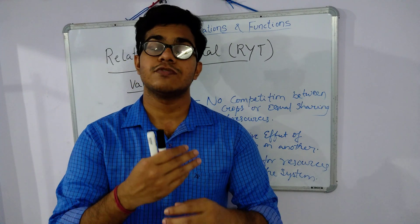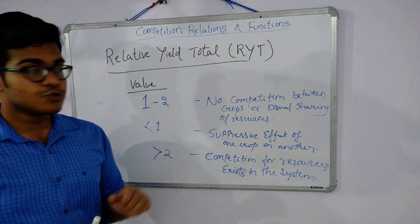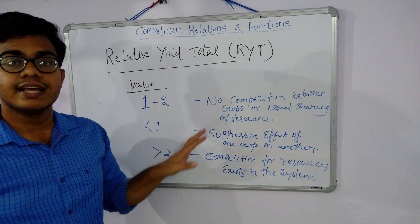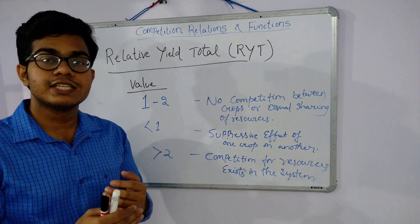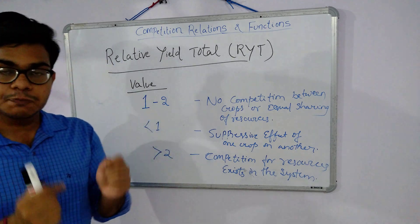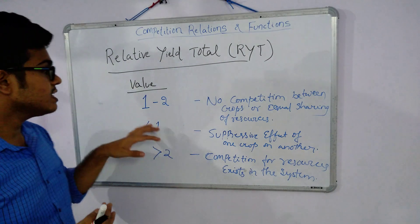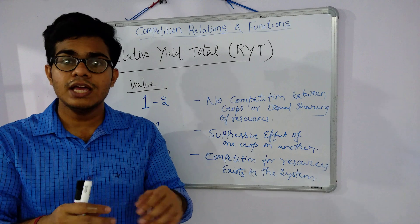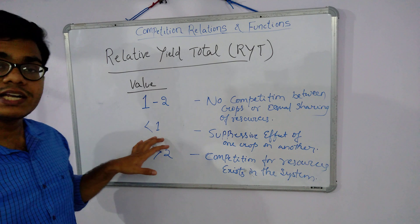Let us look at the values by which we can determine how RYT helps in assessing the efficiency of an intercropping system. If we get a value of RYT from 1 to 2, then we can say that there is no competition between crops and there is equal sharing of resources between the two crops. The output is as expected according to our field and expectations — there is no fluctuation in output, as resources are equally taken by each crop for growth and development.